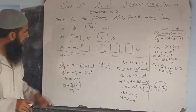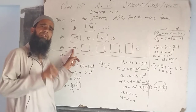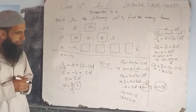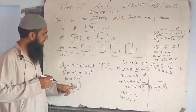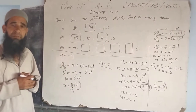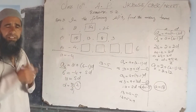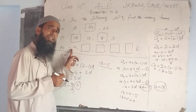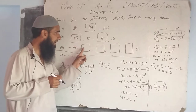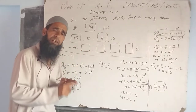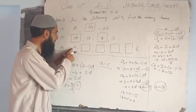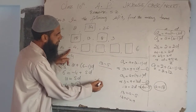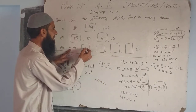Common difference is 2. If we have common difference 2 and first term of a given AP, we can easily find any term of the given arithmetic progression. First term is minus 4. Second term is minus 4 plus common difference, that is minus 4 plus 2, which becomes minus 2.